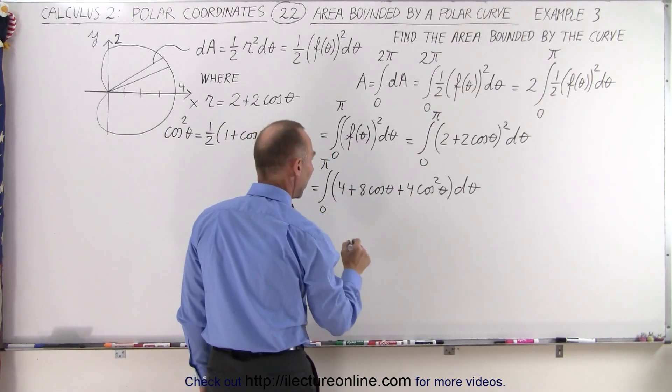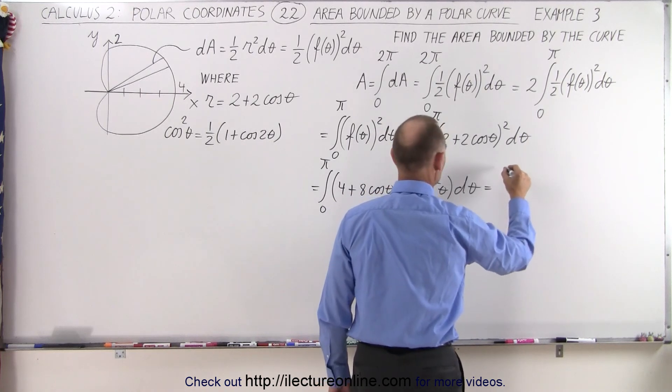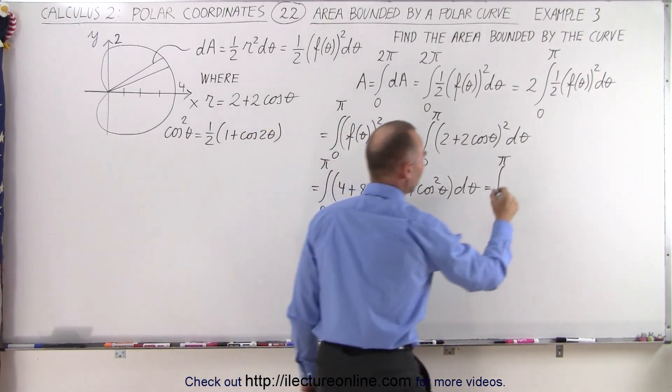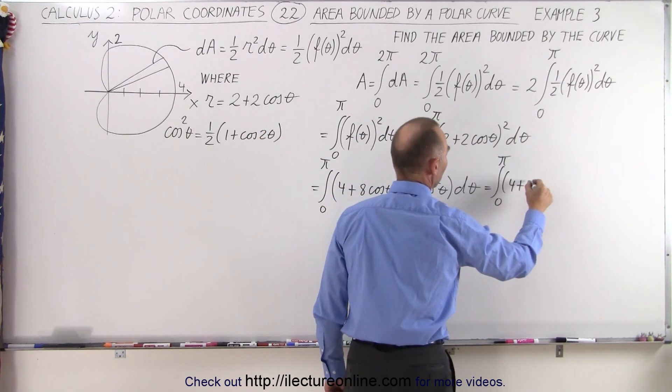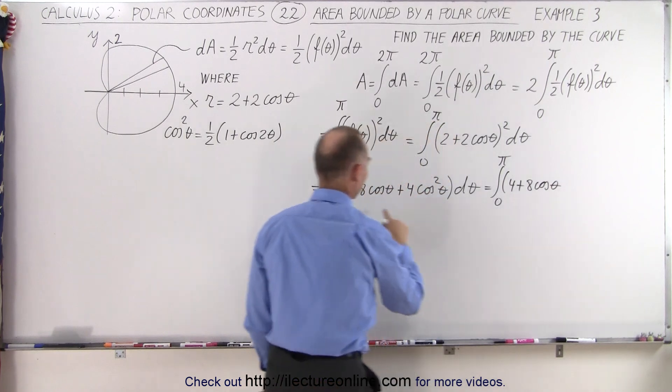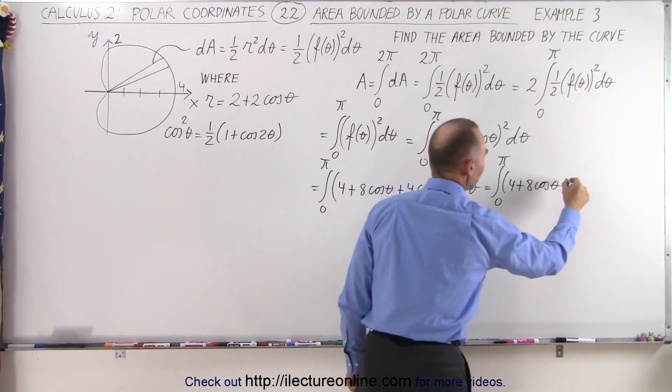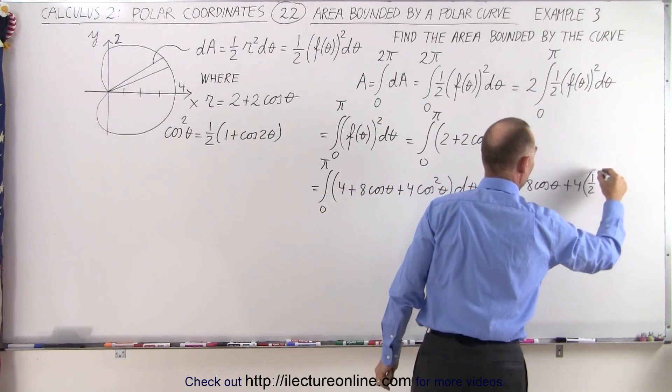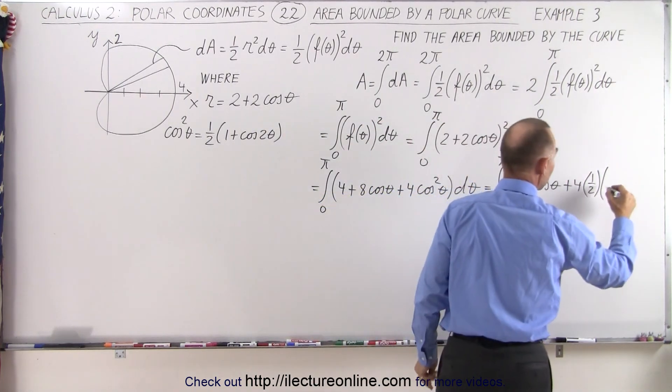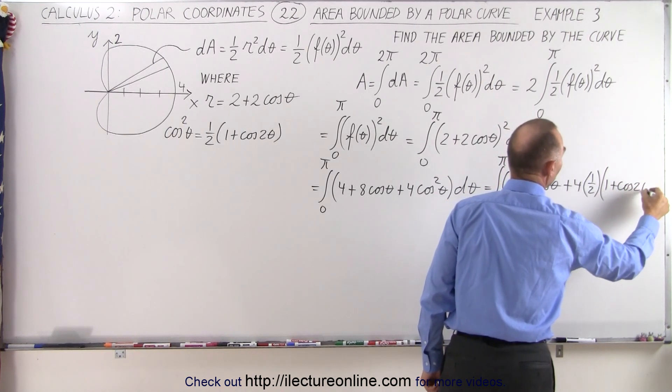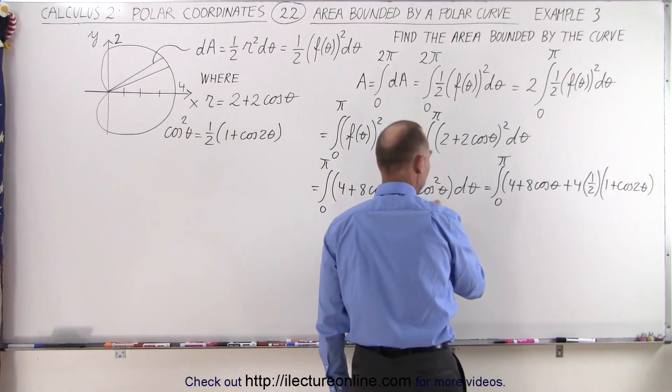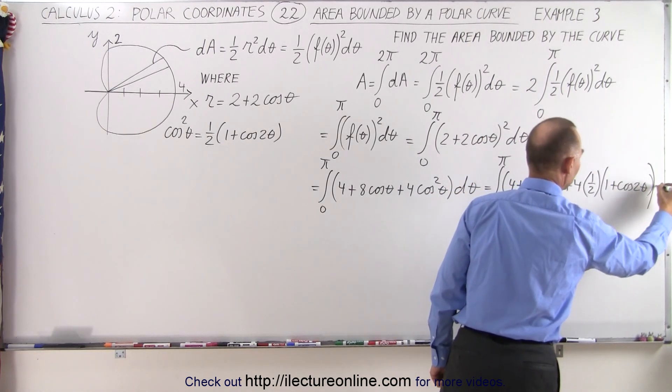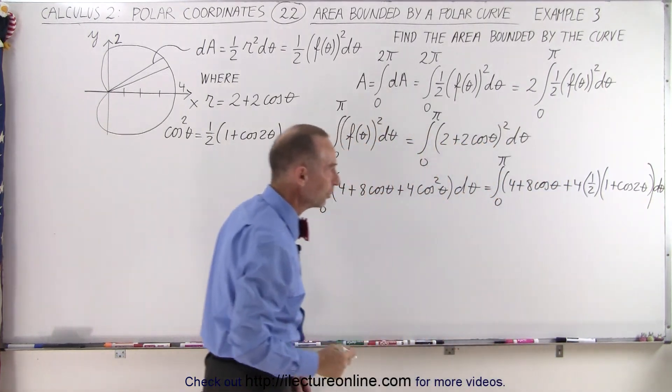So if we replace that in here, then that can be written as, let's go ahead and do it over here, so this is equal to the integral from 0 to pi. Notice we still have these two terms. That would be 4 plus 8 times the cosine of theta plus 4 times 1 half times 1 plus the cosine of 2 times the angle. We started with theta, so now it's 2 theta, and the whole thing times d theta.